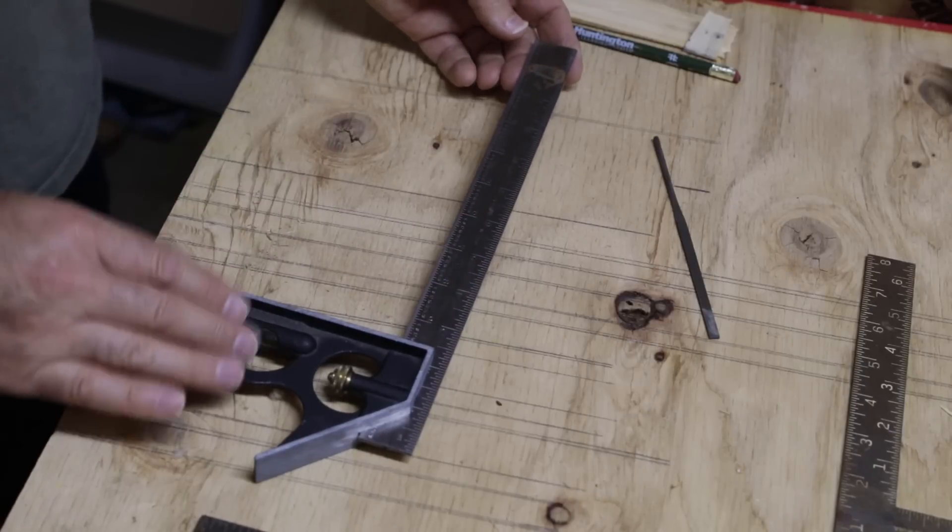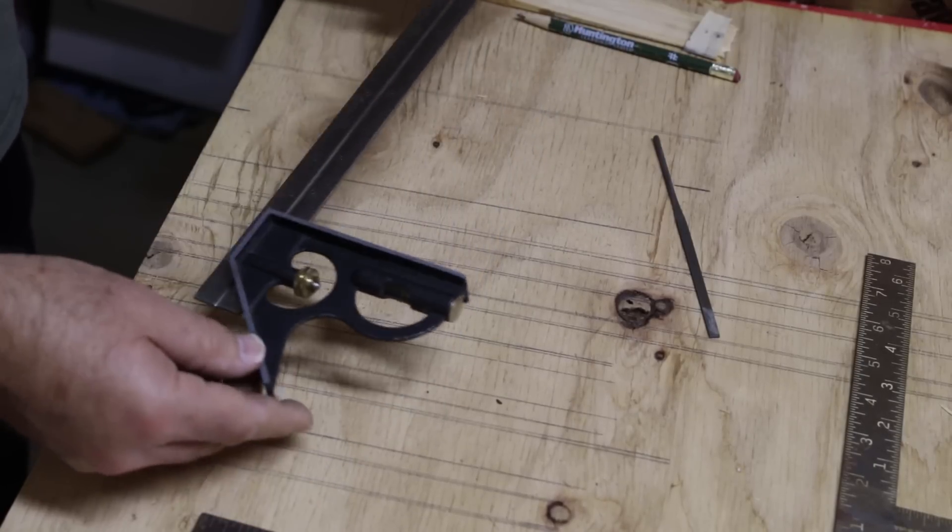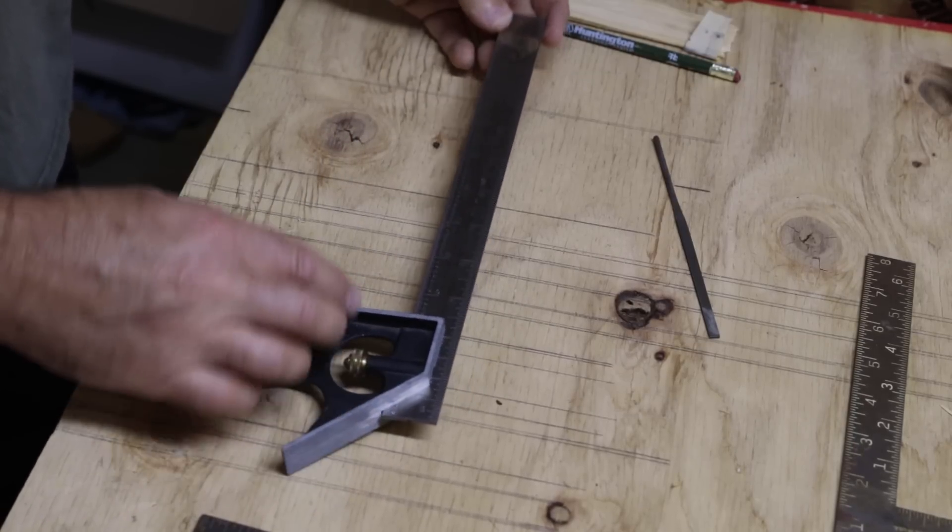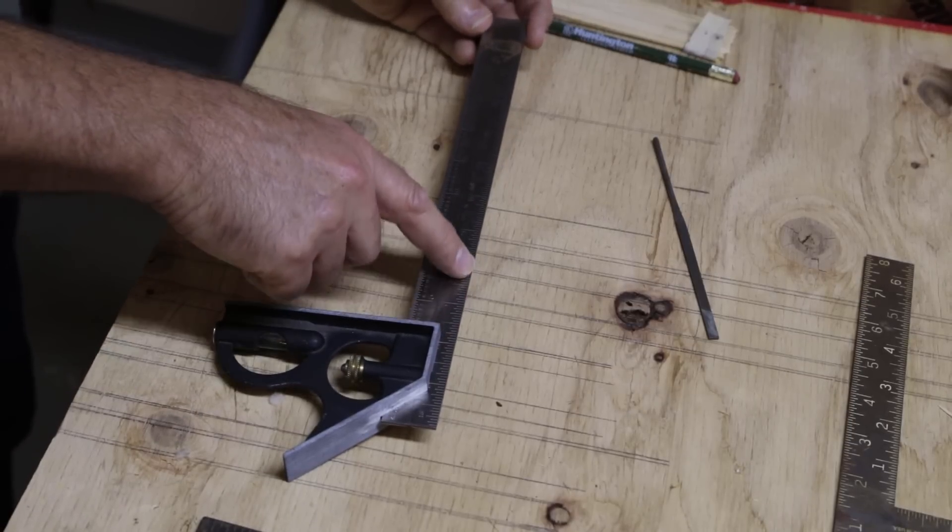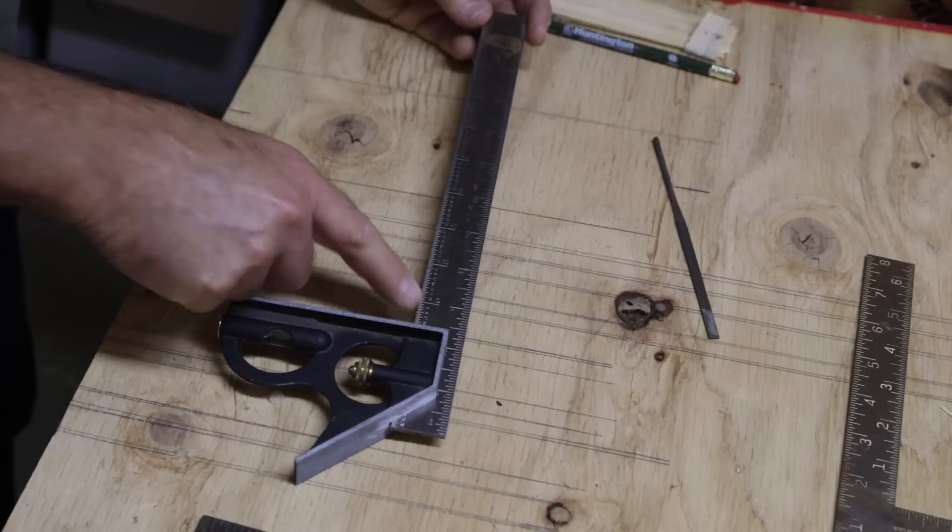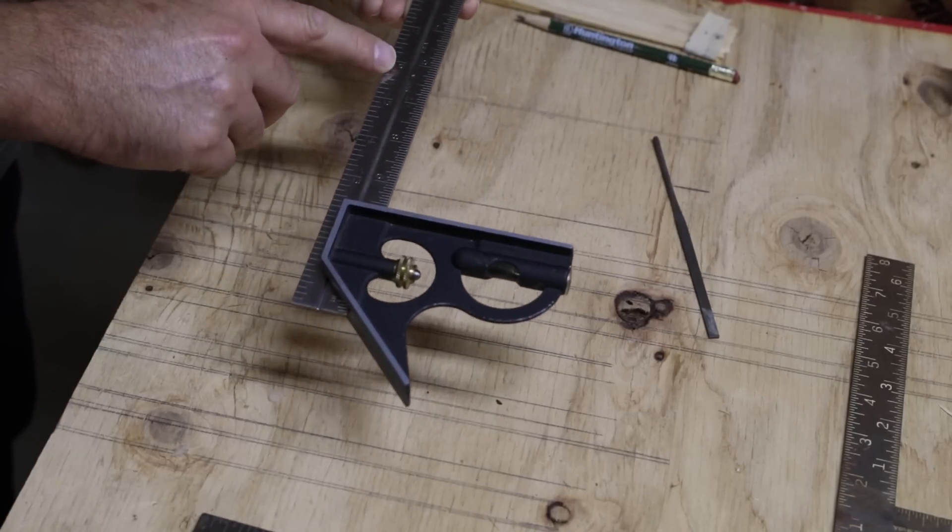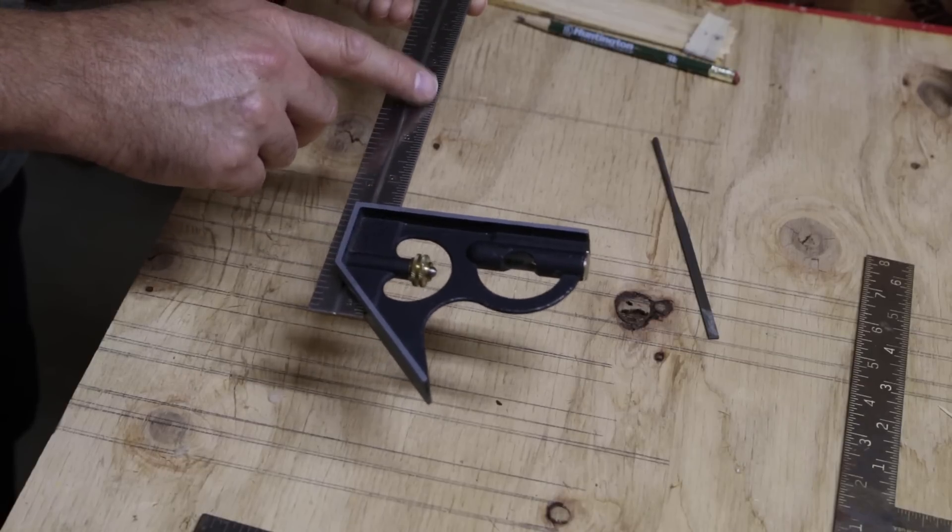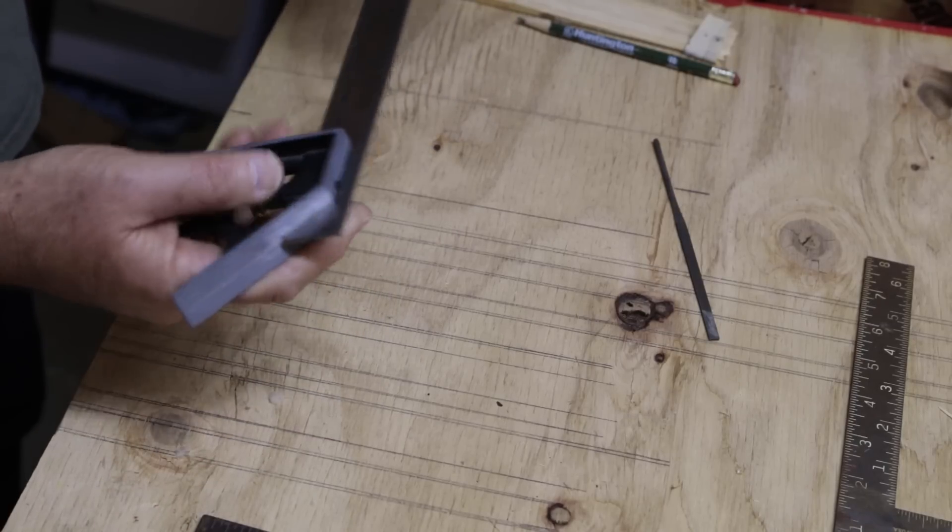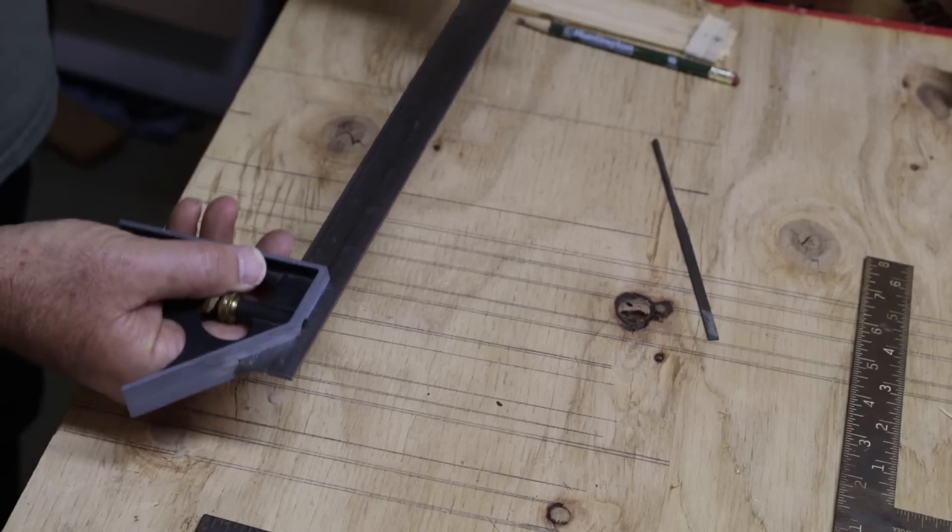This is a fairly cheap combination square. It says made in the USA, but other than that it doesn't even say who made it. There's no manufacturer at all marked on there anywhere. It's got different rules, 16th of an inch, 32nd of an inch on this one, an eighth of an inch, and 16th of an inch on that again. So you can flip this around and stuff and get what side you want to do your markings on.